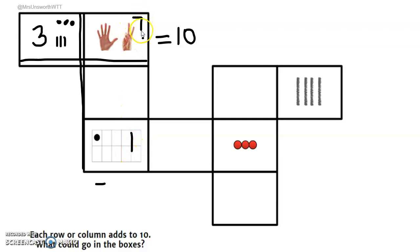So 7 plus 1 equals 8. And we know that all three of these needs to equal 10. So 10 minus 8 equals 2. So this box is going to be 2.